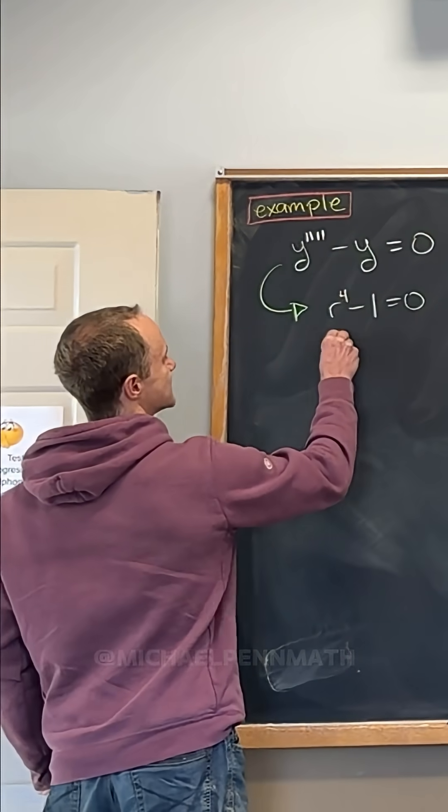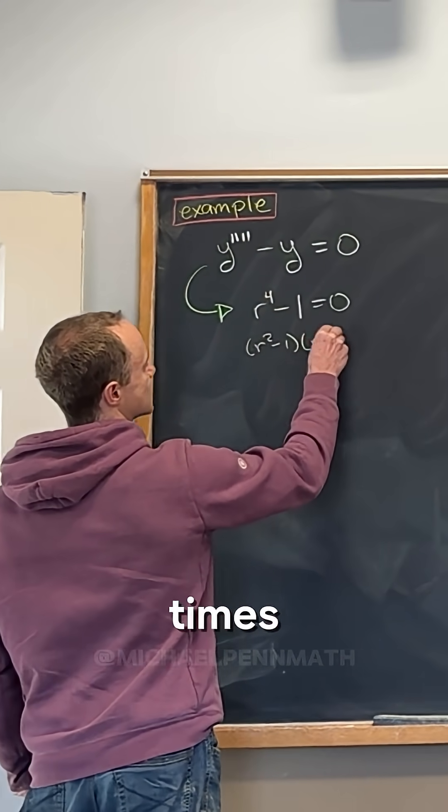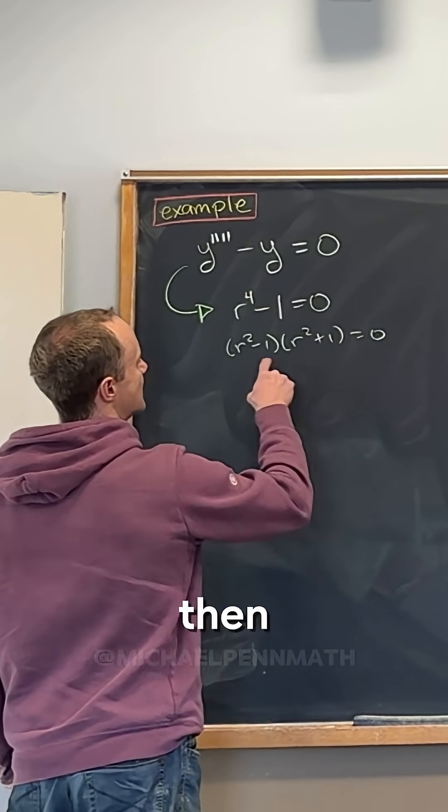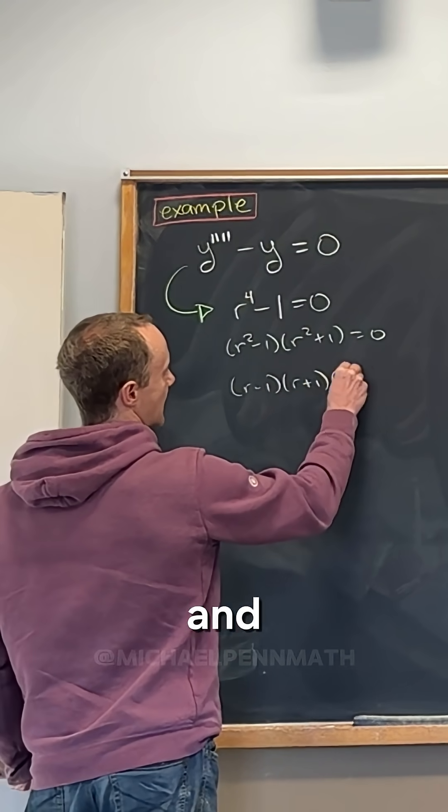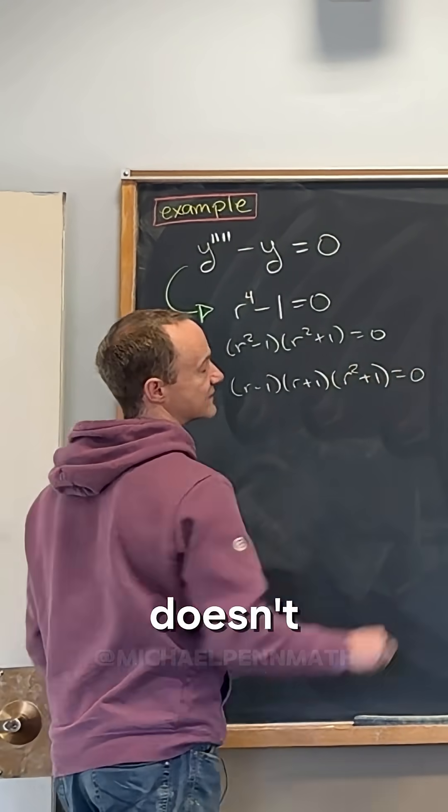factor it. Yeah, so this factors like r squared minus one times r squared plus one. Then the r squared minus one factors again to r minus one r plus one, and then the r squared plus one doesn't factor.